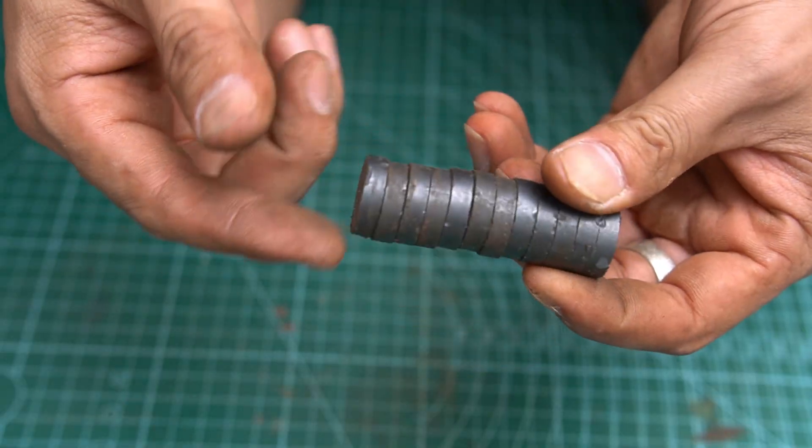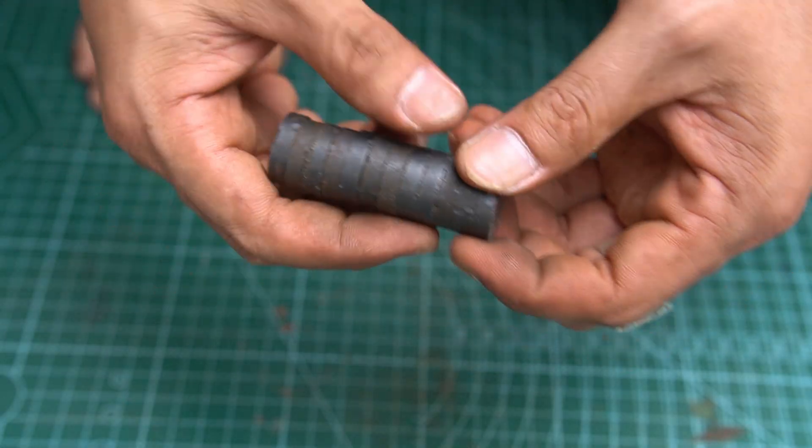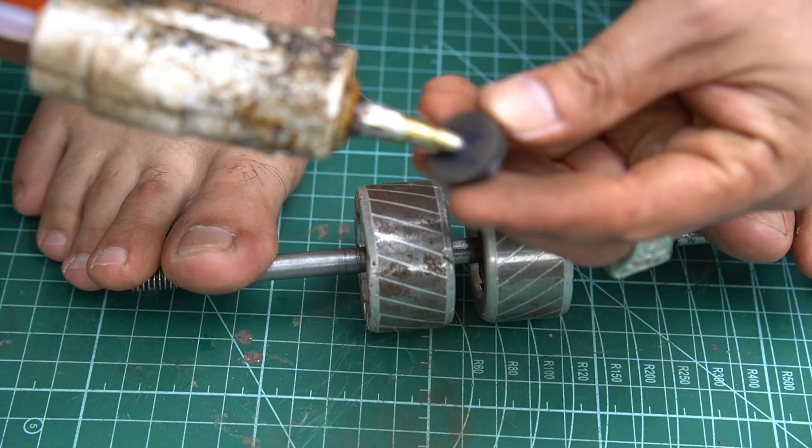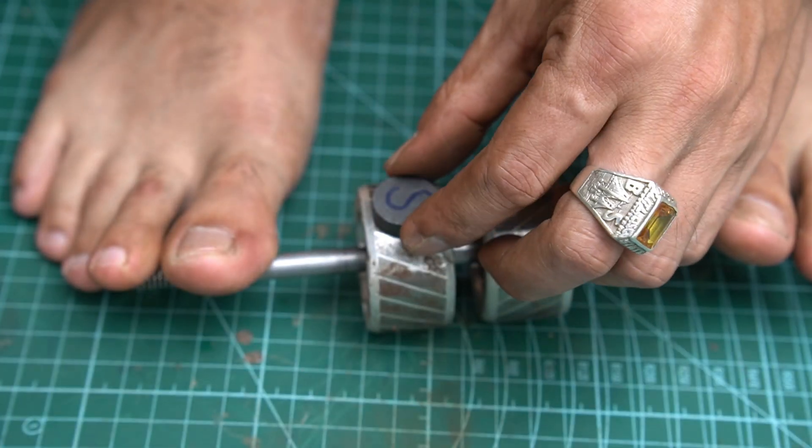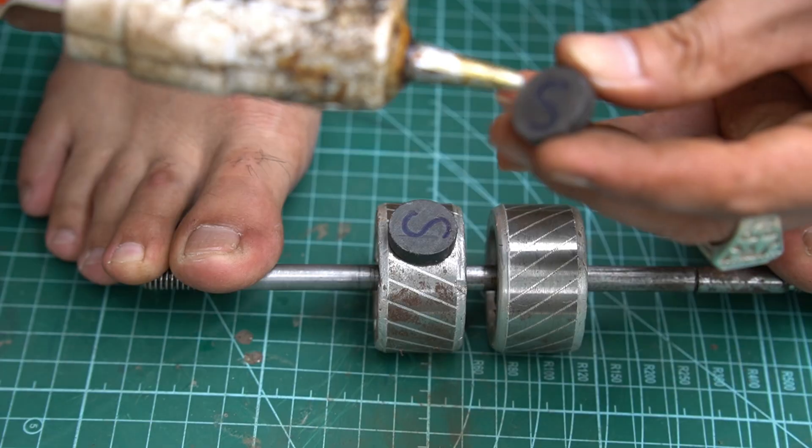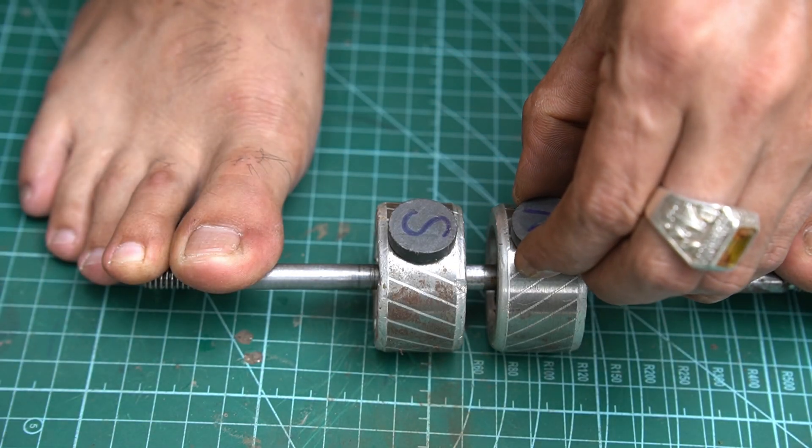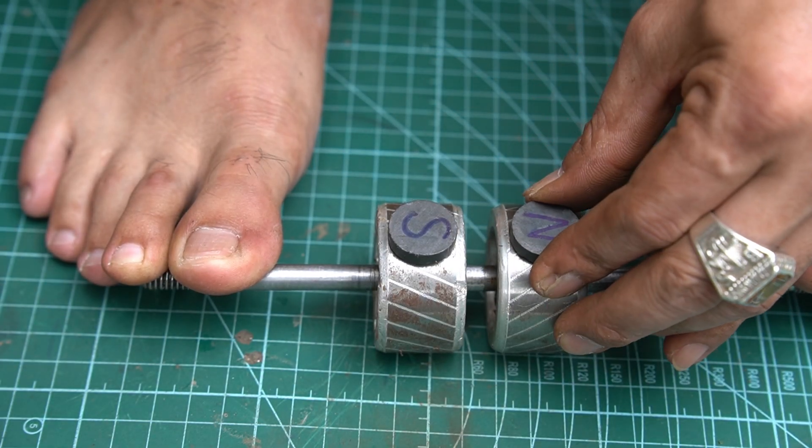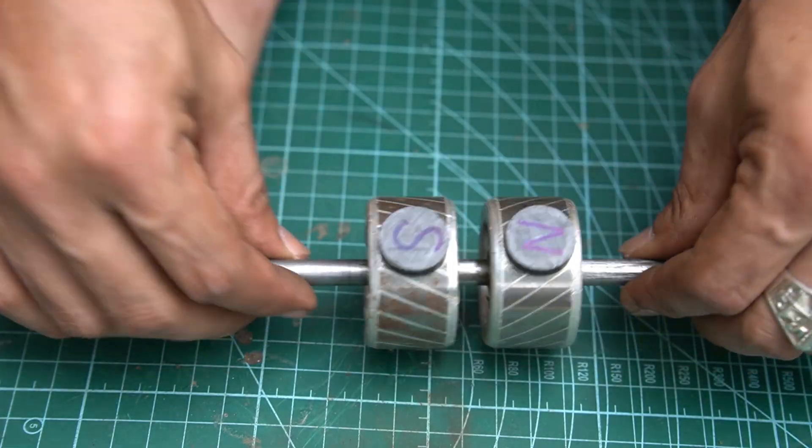Next, I use small magnets with a diameter of 20 millimeters to magnetize and excite the stator coil. I will attach those small magnets to both ends of the rotor shaft.